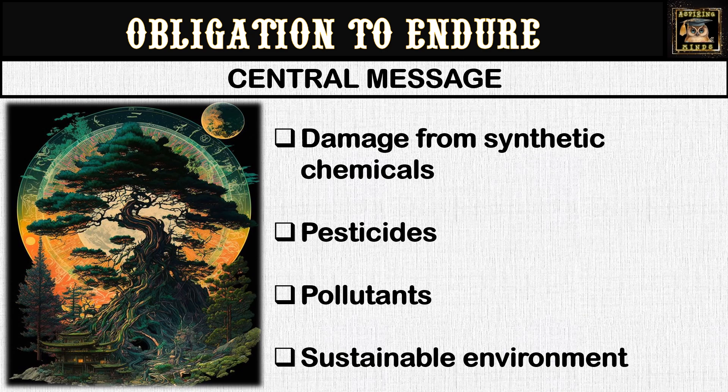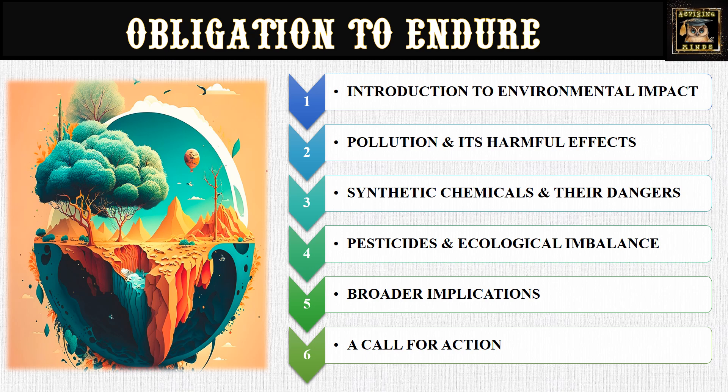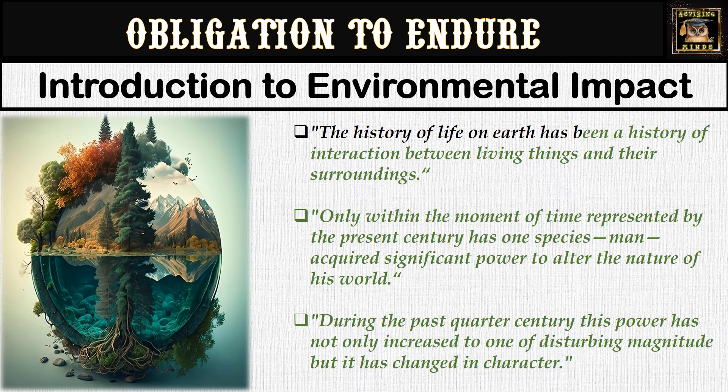The central message of the Obligation to Endure is a warning about the irreversible damage caused by the widespread use of synthetic chemicals. Carson argues that humanity's unchecked and reckless use of pesticides and other pollutants was causing catastrophic harm to the environment and all living beings. She calls for greater awareness, regulation, and a shift towards more sustainable and environmentally friendly practices. For a better understanding, I have divided the work into six parts with textual references and detailed explanations.